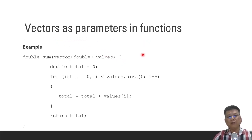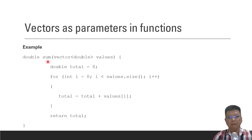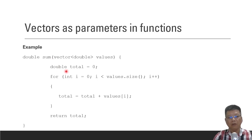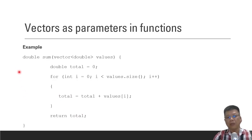For vector as parameters in functions: in some cases we might want to pass a vector into a function. This example shows a function that returns double, the variable is total. The name of the function is sum, and the vector is named values with data type double. We pass this vector into the function sum. Inside, we declare a variable total as double initialized to zero, use a for loop to calculate the sum of all values in the vector, store it in total, then return it to the main program.